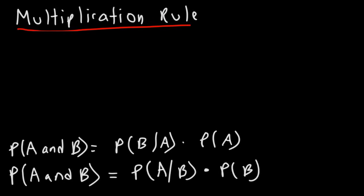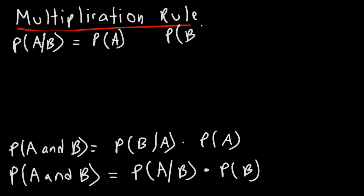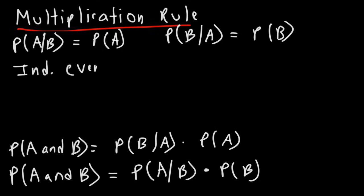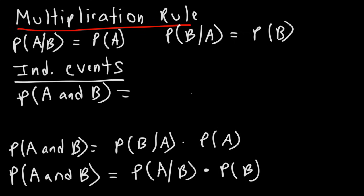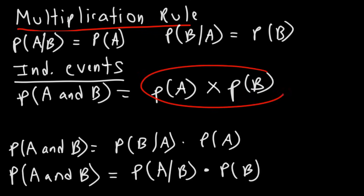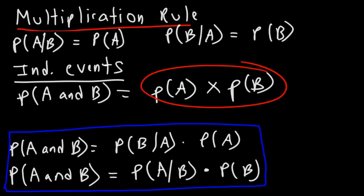Sometimes the two events you're dealing with might be independent events. An independent event is an event that does not depend on another event. For independent events, the probability of A given B equals the probability of event A, because A does not depend on B. Likewise, the probability of B given A equals the probability of event B. So when dealing with independent events, the probability of A and B is simply P(A) times — not plus, but times — P(B).